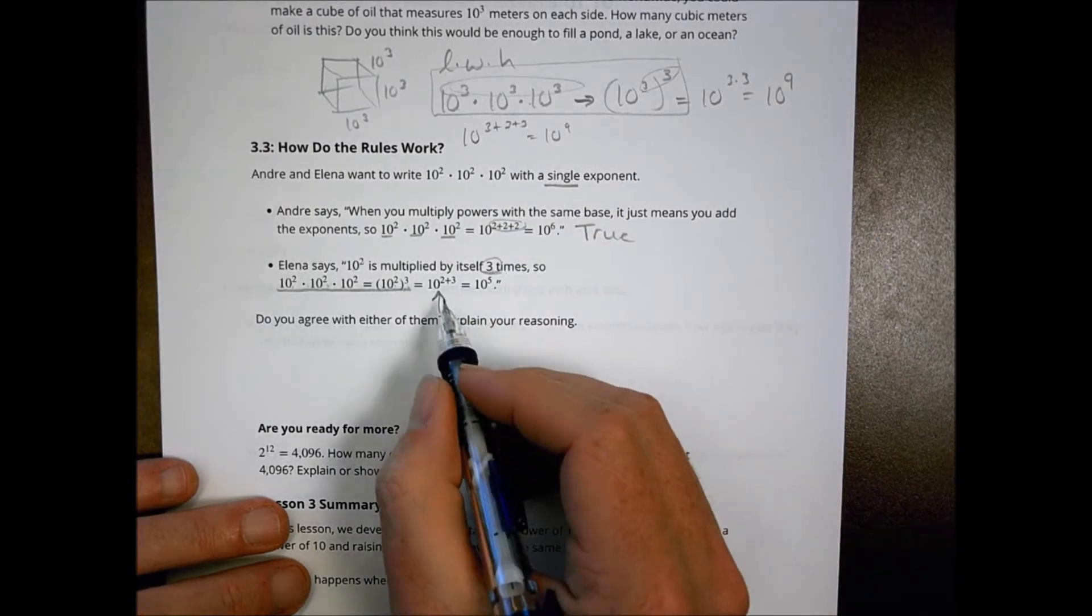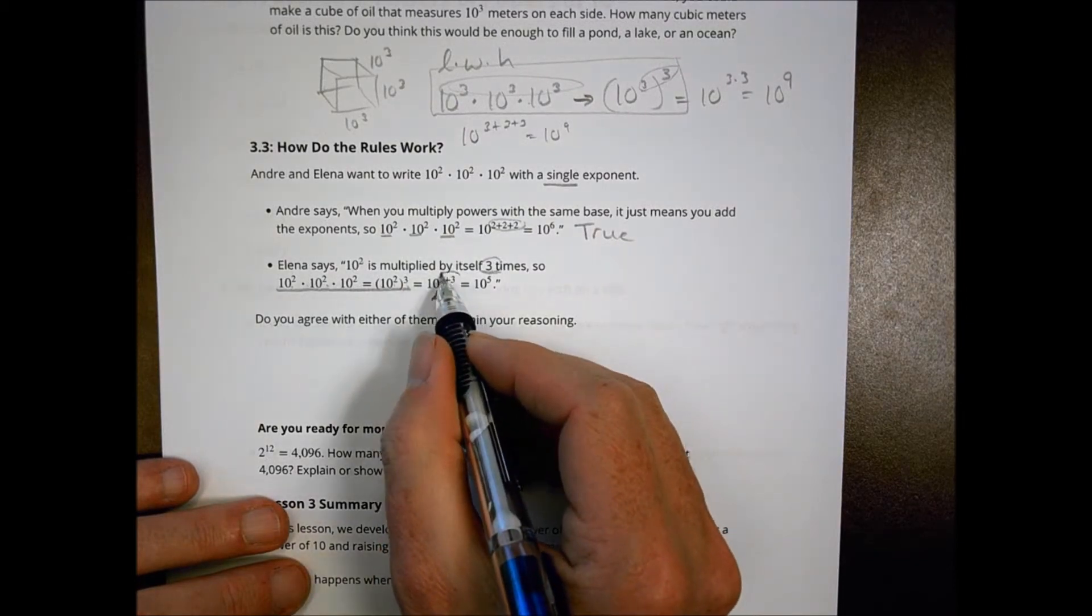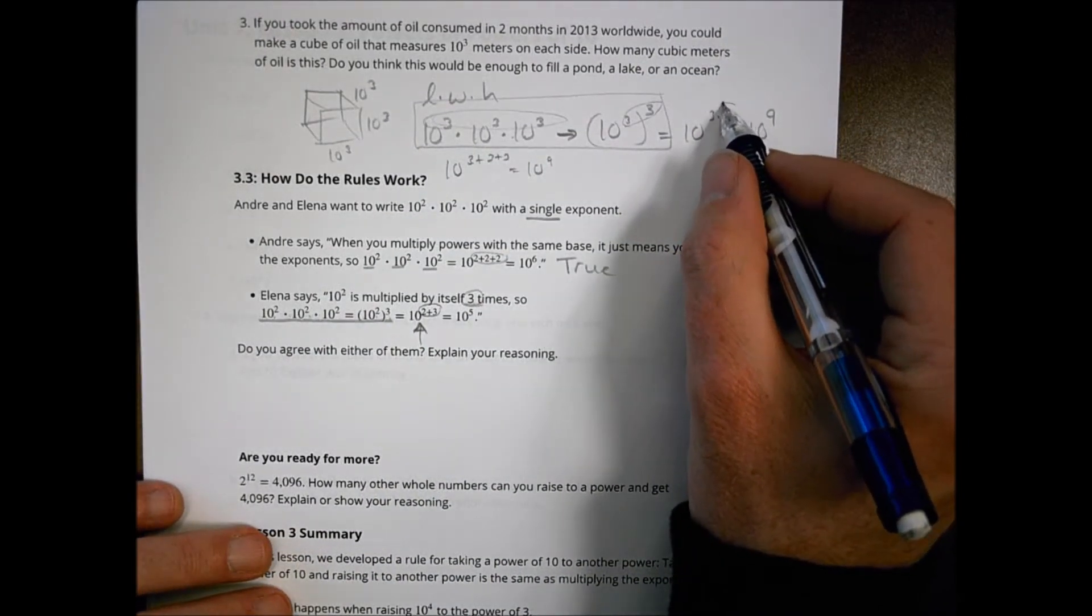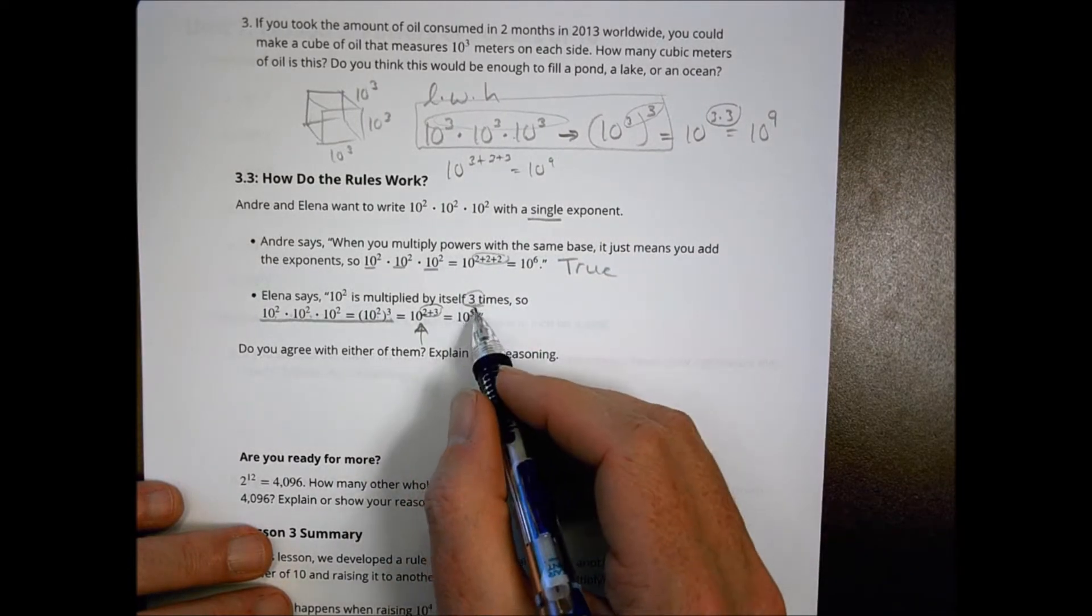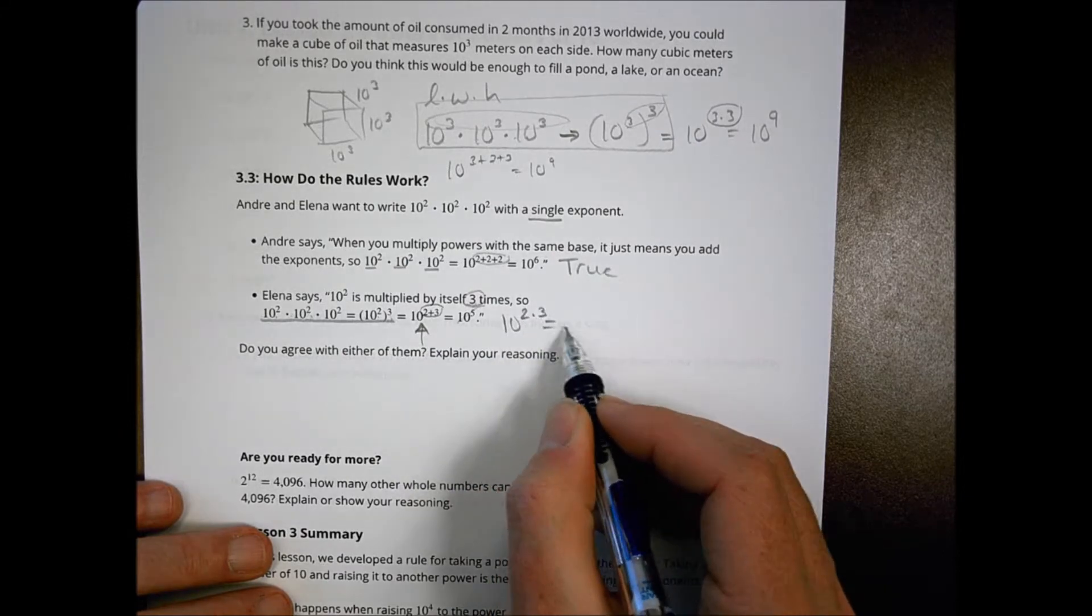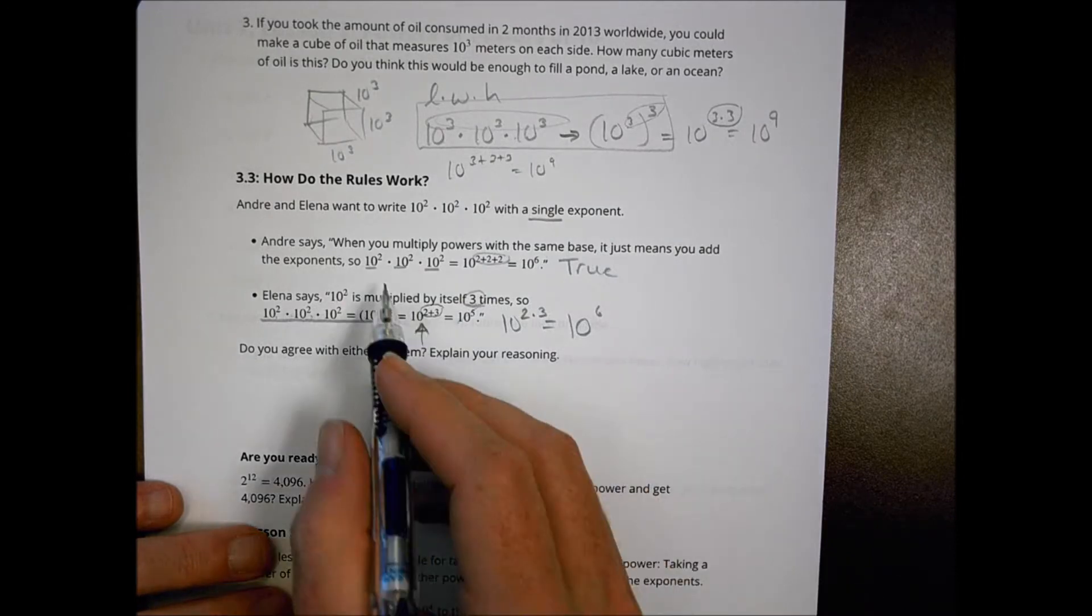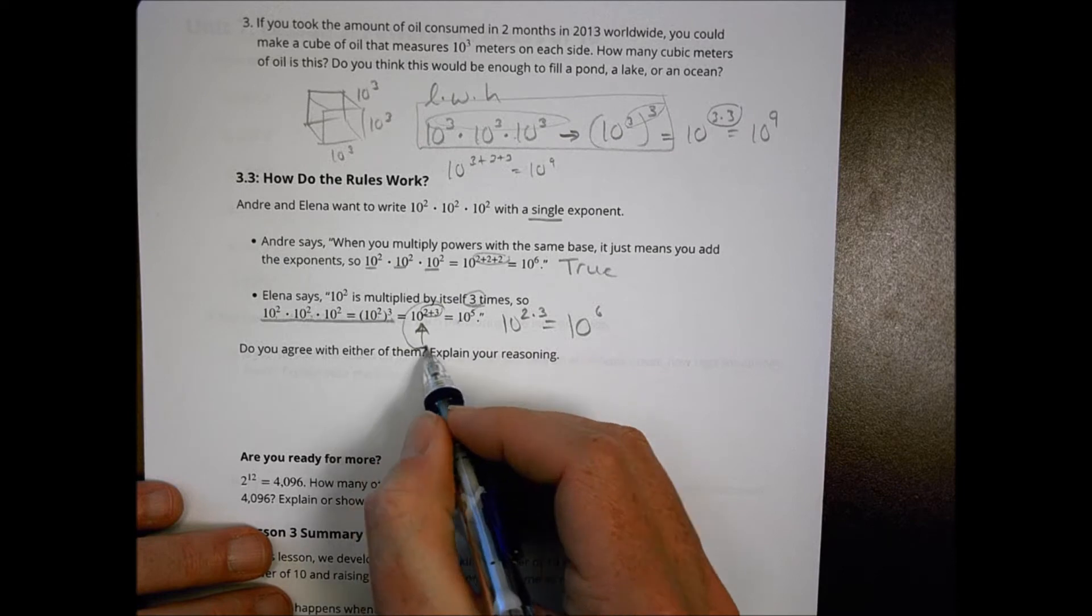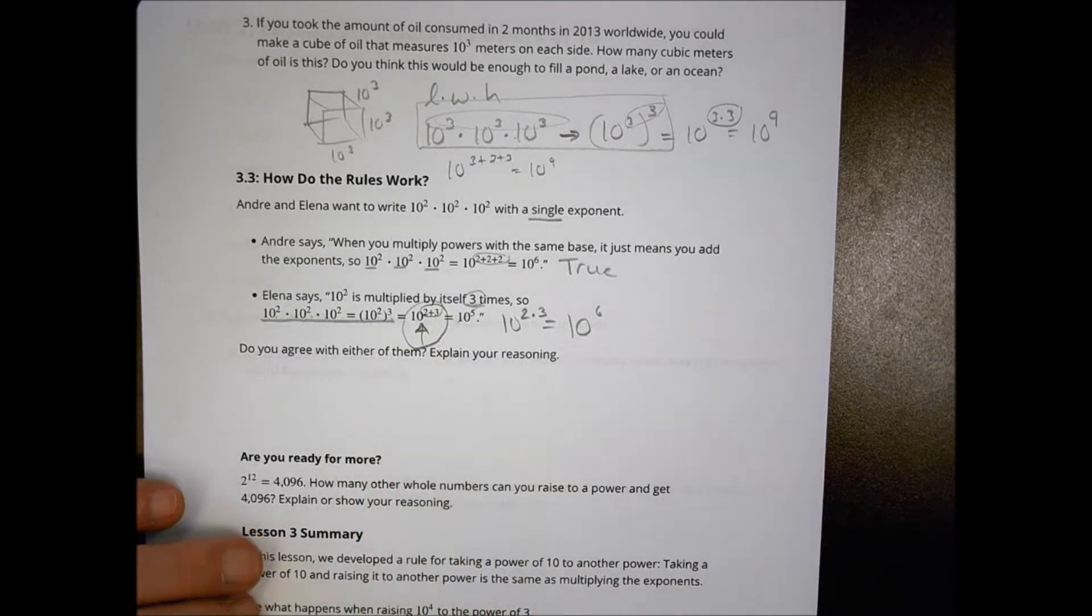But then notice our next step. She said, so because of that, let's do 10 to two plus three. The difference between the two plus three and what we did above was we said the exponents here should be multiplied together. So that's where she made a little mistake. This shouldn't be 10 to the fifth. It should be 10 to the two times three, which should still be 10 to the sixth. So we'd agree fully with Andre. We would say Elena was on the right track until she got right there and made a little mistake.